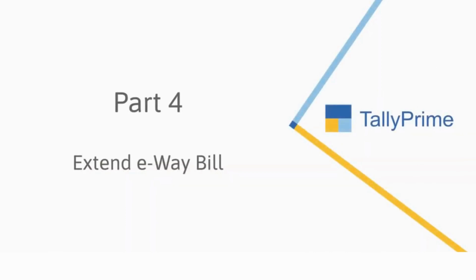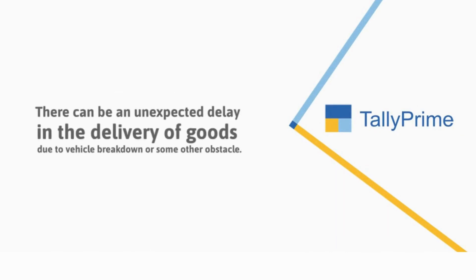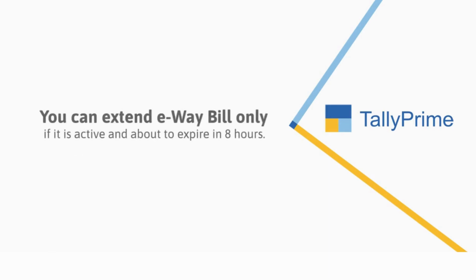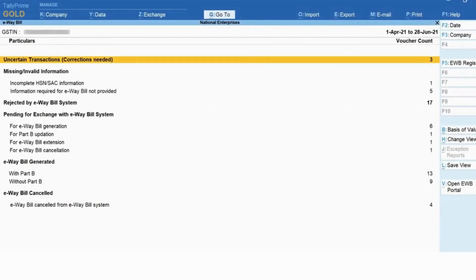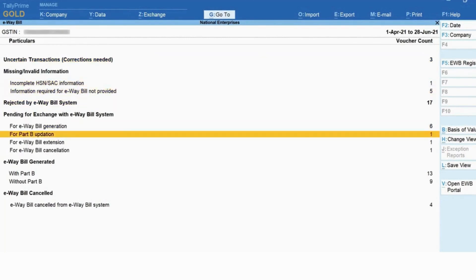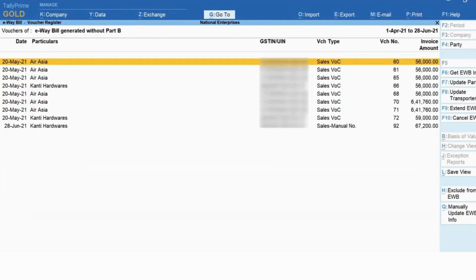You can also extend the validity of the e-way bill using Tally Prime. There can be an unexpected delay in the delivery of goods due to vehicle breakdown or some other obstacle. In such a case, you can extend the validity of the e-way bill, but only if it is active and about to expire within 8 hours. To do this, drill down on the 'E-way Bill Generated With Part B' or 'Without Part B' section as applicable — for now, let's drill down on 'E-way Bill Generated Without Part B'.